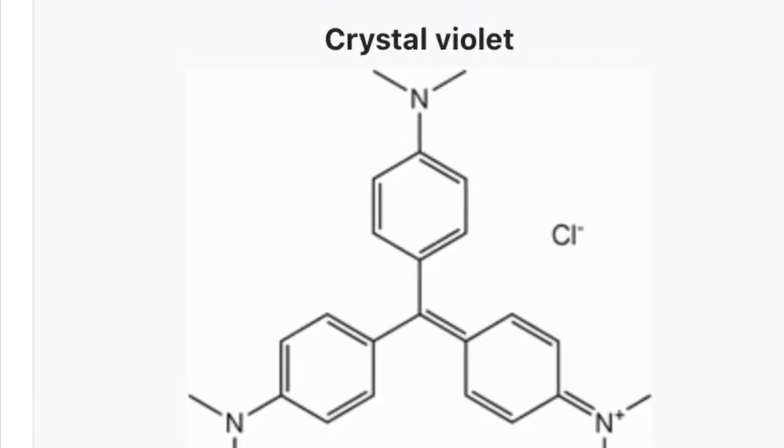Crystal violet has been known about for a really long time, and it is what's known as a tri-aryl methane dye. And what that really means is that there's a lot of double bonds in there that are working together to give it this really bright, intense purple color.